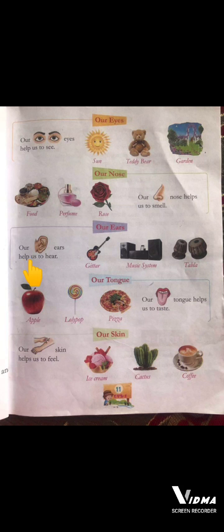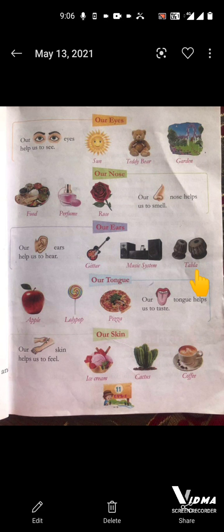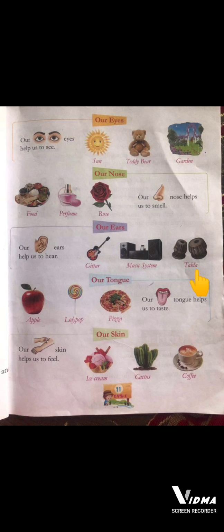Our Ears Help Us To Hear — jo hamare kaan hain woh sunne mein humari help karte hain. First one is Guitar — koi bhi musical instrument jo play karta hai, hamare kaan use hear kar sakte hain. Second one is Music System. Third one is Tabla. Aise hi sabhi students ne ise read out karna hai. Thanks. Have a good day.